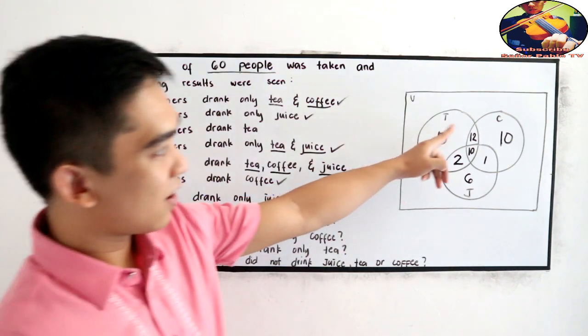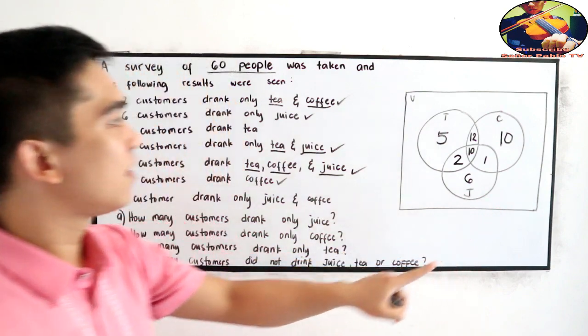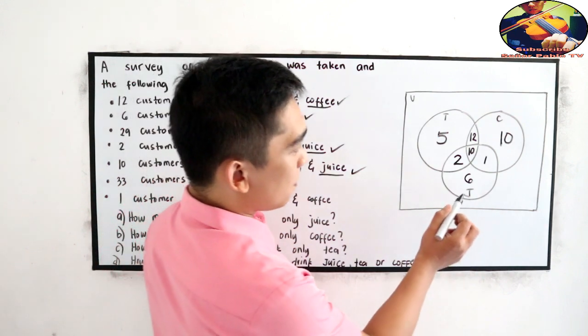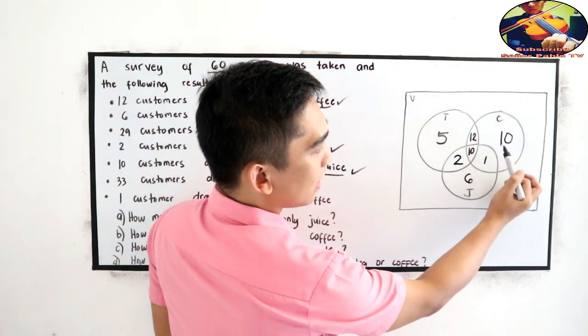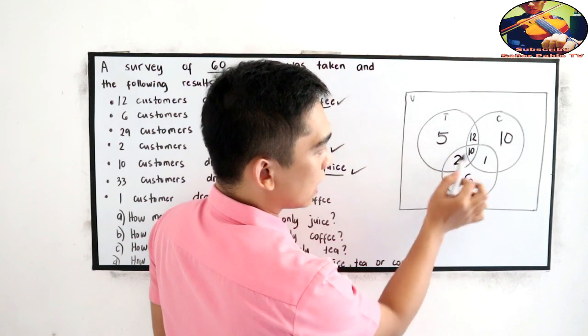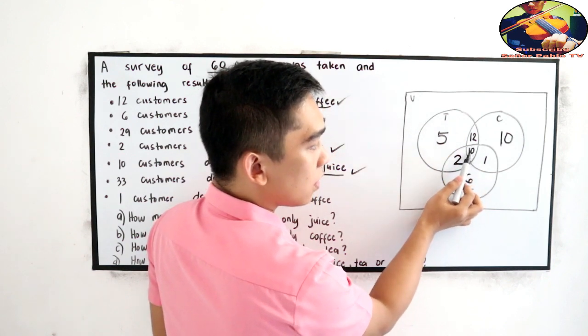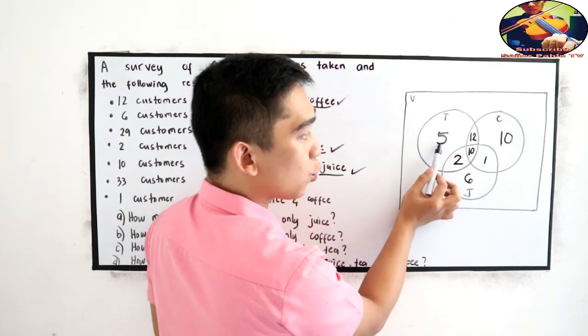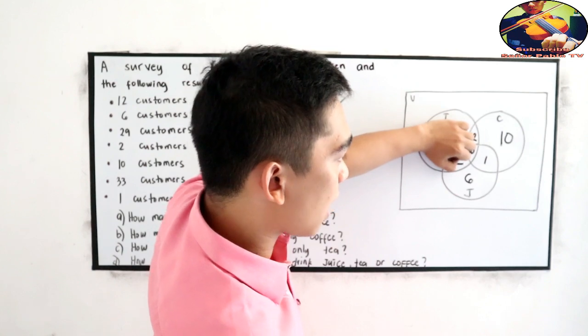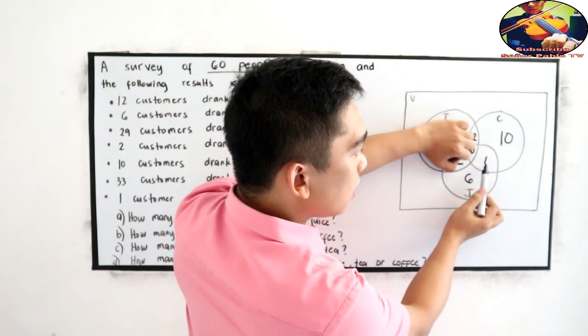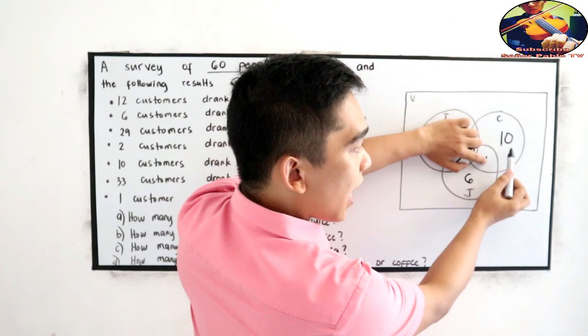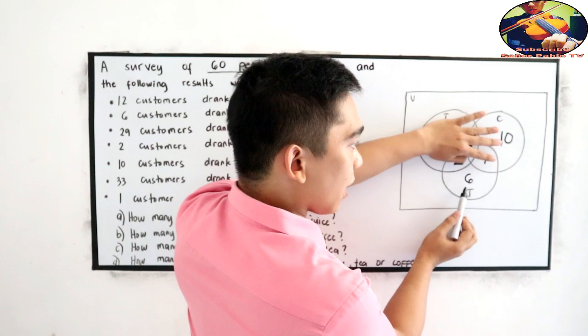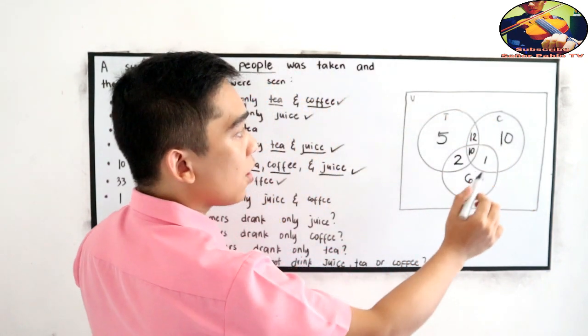Since our events are now completed, now let's check the total. So let's start with the tea. 12 plus 10, 22 plus 2, 24, plus 5, 29. So for the tea is 29. Plus 1, 30. 30 plus 10, 40. Plus 6, 46. So the total in our 3 sets is 46.